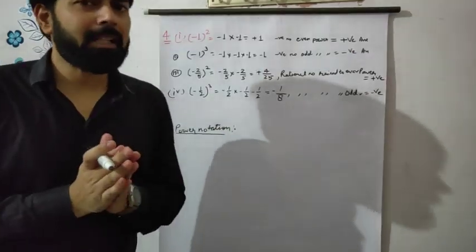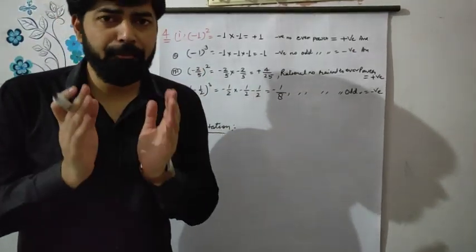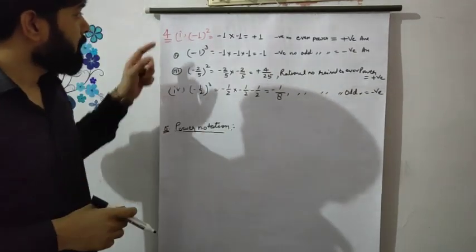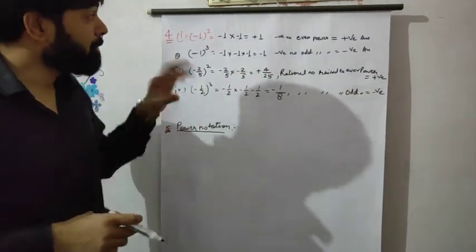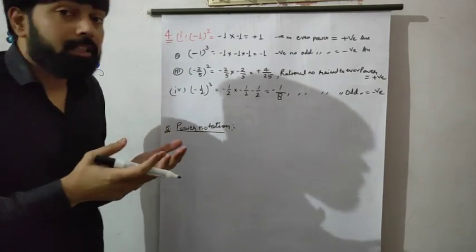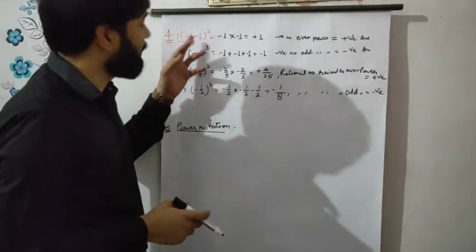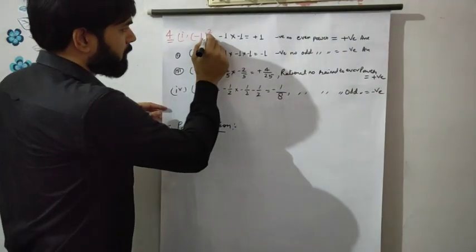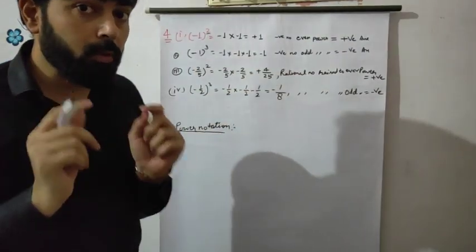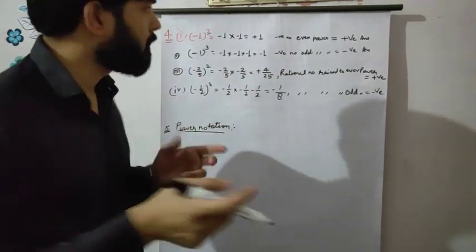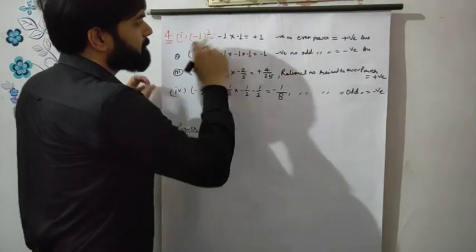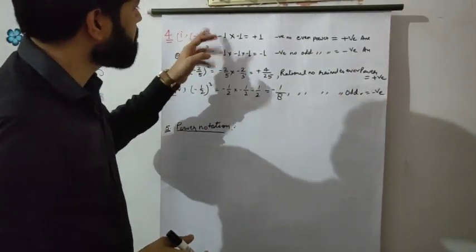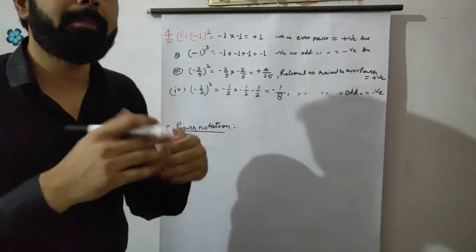Now we have some important examples. Look here and observe. Minus 1 to the power 2: expand this — it means minus 1 multiplied 2 times, so minus 1 × minus 1.